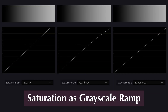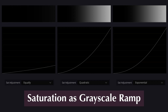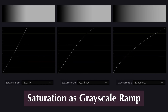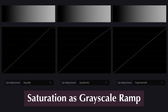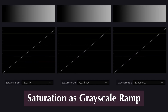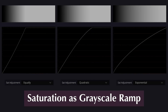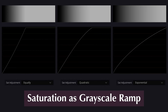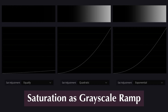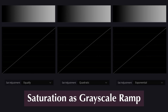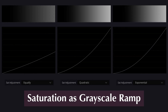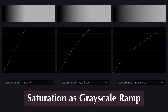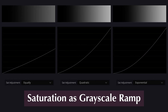Next we have Saturation Adjustment Method, which allows you to control saturation in three ways. The first is Equal, which applies saturation evenly across all values. The second is Quadratic, which impacts higher saturation levels more dramatically. The third is Exponential, which focuses more on affecting the lower saturation range.